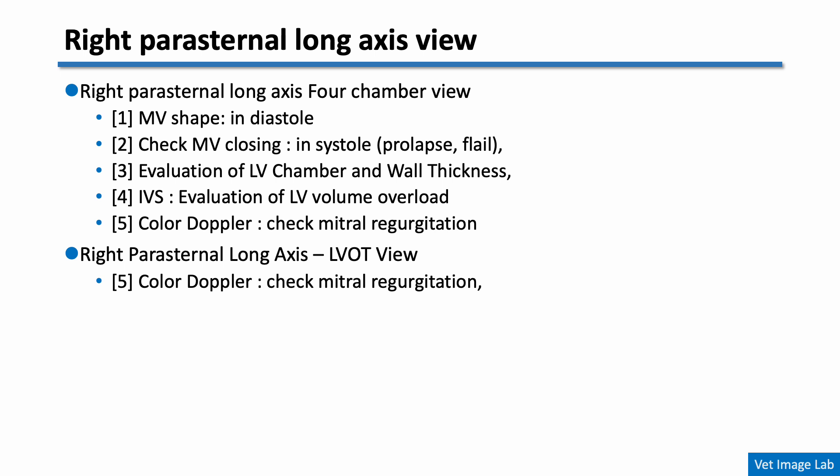Moving to the right parasternal short axis view: at the papillary muscle level, we assess the symmetry of the left ventricular shape and uniform contraction. Then we perform M-mode evaluation — by measuring the left ventricular diastolic dimension we can assess left ventricular enlargement, and by measuring the left ventricular systolic dimension and fractional shortening, we can estimate left ventricular systolic function. Finally, at the aortic valve level, we calculate the left atrium to aortic root ratio — this measurement is essential for detecting left atrial enlargement, a key indicator of MMVD disease progression.